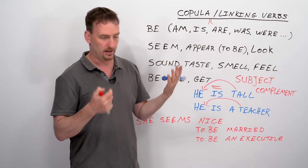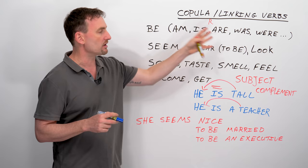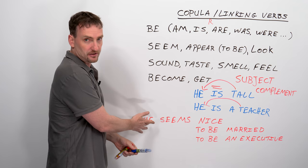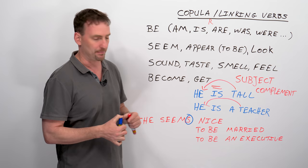And the same applies to the other verbs. Seem does not take an object. Appear or appear to be does not take an object. All of these do not take an object. Another thing that's very important to remember is that all of these verbs, because they're not in a subject, verb, object structure, will be followed by an adjective but never by an adverb.